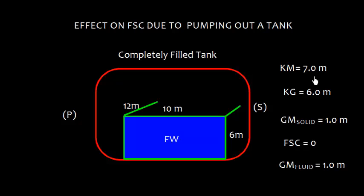Let us also take some values that KM, that is metacentric height from keel of the vessel is 7 meter and the KG is 6 meter. The GM solid will be KM minus KG which is 1 meter. Now, since the tank is completely filled, the Free Surface Correction in this case will be 0 and we get this GM fluid as 1 meter.